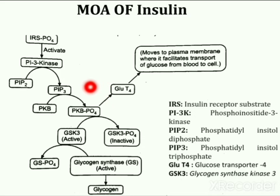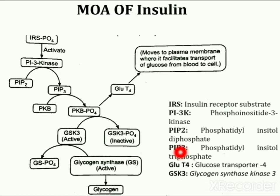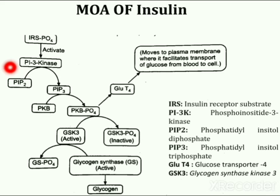This flowchart is showing the detailed mode of action of insulin. The various representations used here are: IRS for insulin receptor substrate, PI3K for phosphoinositide 3-kinase, PI2 for phosphatidylinositol diphosphate, PI3 for phosphatidylinositol triphosphate, GLUT4 for glucose transporter 4, and GSK3 for glycogen synthase kinase 3.